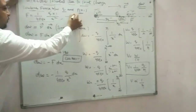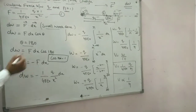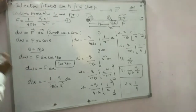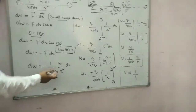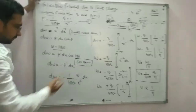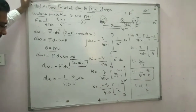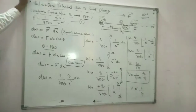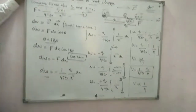Substituting the value from equation 1: dW = −(1/4πε₀) × Q/x² × dx. This is the expression for small work done.